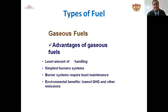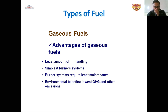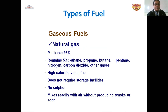For gaseous fuel, we use a common example seen at home — the simplest burner system. Gas fuel benefits include least maintenance requirements and environmental benefits. It produces the lowest CO, hydrocarbons, and other emission problems. Natural gas consists of approximately 95% methane and 5% of other gases including ethane, propane, butane, pentane, nitrogen, and carbon dioxide. Gas fuel has a high calorific value, does not require storage facilities, contains no sulfur, and easily mixes with air without producing smoke or soot.